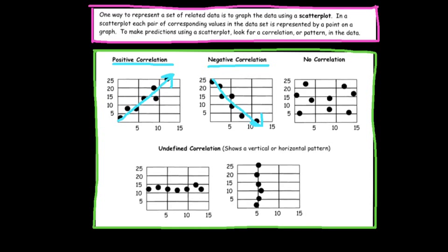The third most common type is a no correlation. These are problems where the variables have no relationship to each other whatsoever. In a no correlation, we can't really draw a positive or negative line through the graph — instead, we draw a circle to encompass all the data. There's no relationship among the data.